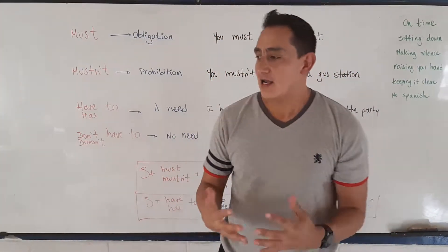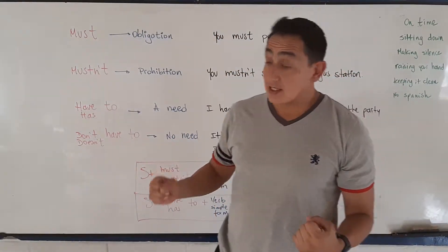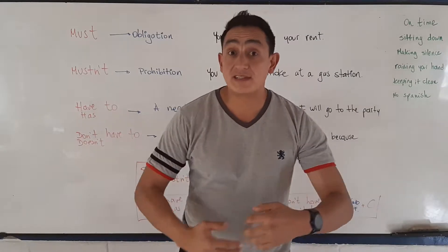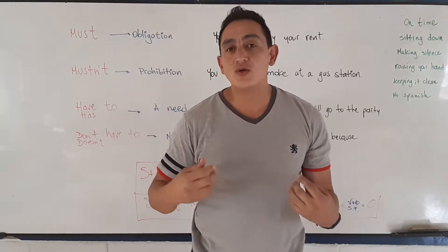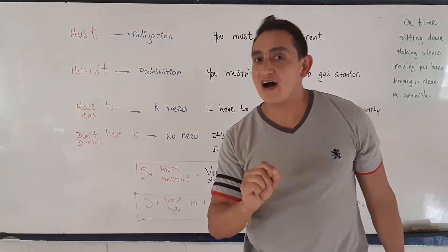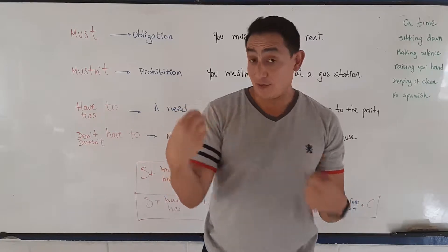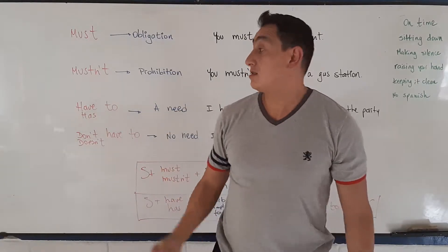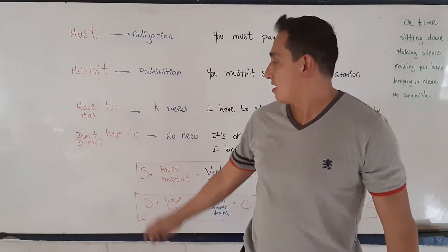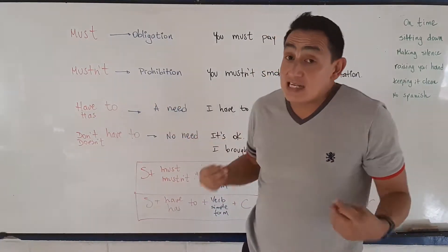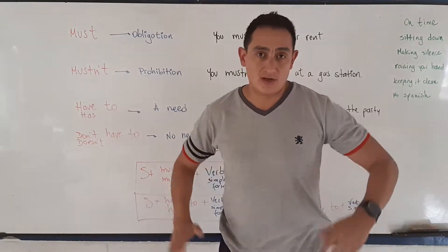These are modal verbs and auxiliary verbs that help you when you need to specify if you are going through an obligation, a prohibition, a need, or when you don't have a need of anything.